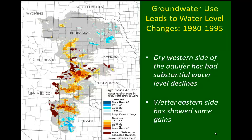It's interesting to note that the drier western side of the aquifer — meaning the side with less average annual precipitation — has more substantial water level declines. In contrast, where we tend to see water level increases, particularly in Nebraska, those occur on the wetter, eastern side of the aquifer where higher annual average precipitation leads to more water level increases.